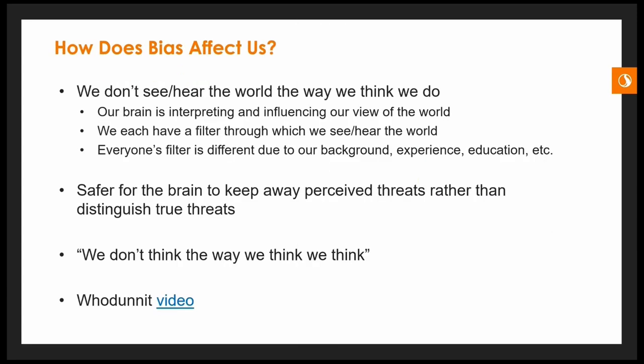How does bias affect us? We don't see and hear the world the way we think we do — our brain is interpreting and influencing our view of the world. That fast brain is trying to very quickly assess situations and keep us out of danger. We each have a filter through which we see and hear the world, shaped by our background, experience, education, where we grew up, and our family. It's safer for the brain to keep away perceived threats rather than actually distinguish true threats — it's this tug of war between the fast and the slow brain.